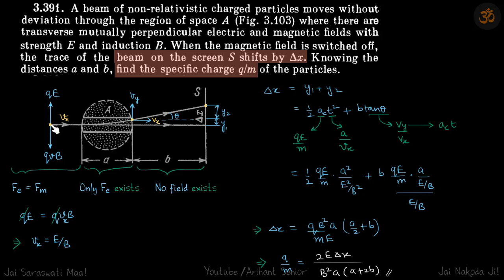So a charged particle enters through three different regions. In the first region, it's given that there are mutually perpendicular electric and magnetic fields, but it is still traveling without deviation, which means the forces are balanced. So QE is equal to QVB in the first region.